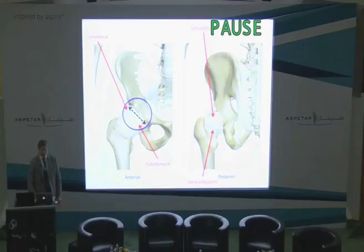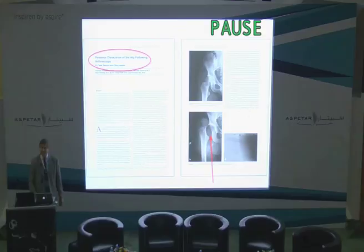Of course, if you get in there and you do a capsulotomy — be it arthroscopically or open — the bigger the capsulotomy, the more you may defunction those ligaments, and in many respects the more you risk destabilizing your patient. No wonder, therefore, that one can look at dislocations of hips occurring after hip arthroscopic surgery — because although it is very, very rare, when I look at the reports, nowhere in those reports is there much mention of what has been done with the capsule.